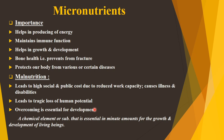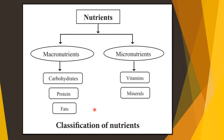Nutrients are classified as macronutrients and micronutrients. Macro means nutrients required by our body in large amounts — that are carbohydrates, proteins, and fats. Micro means nutrients required by our body in small quantity — those are vitamins and minerals.